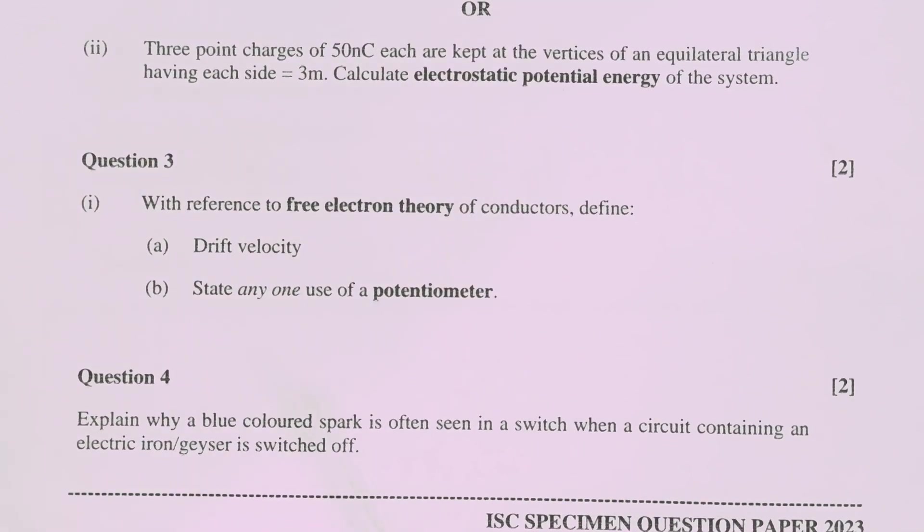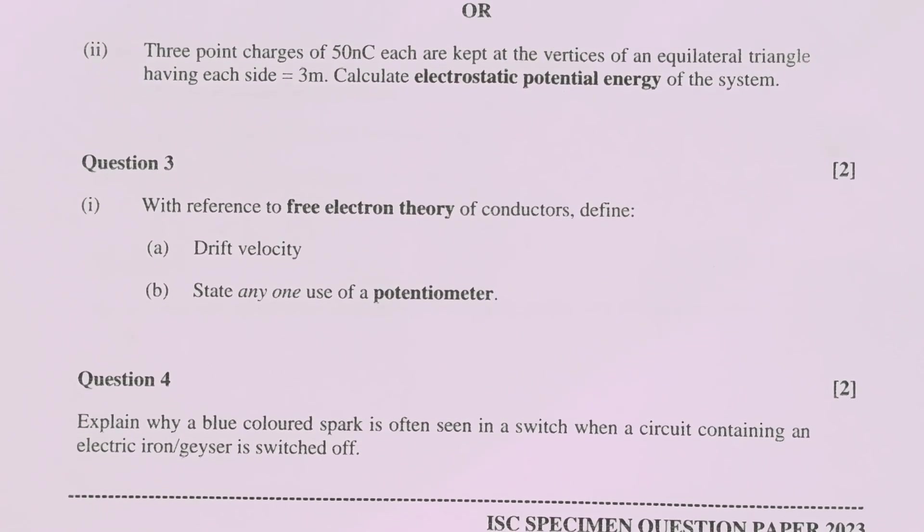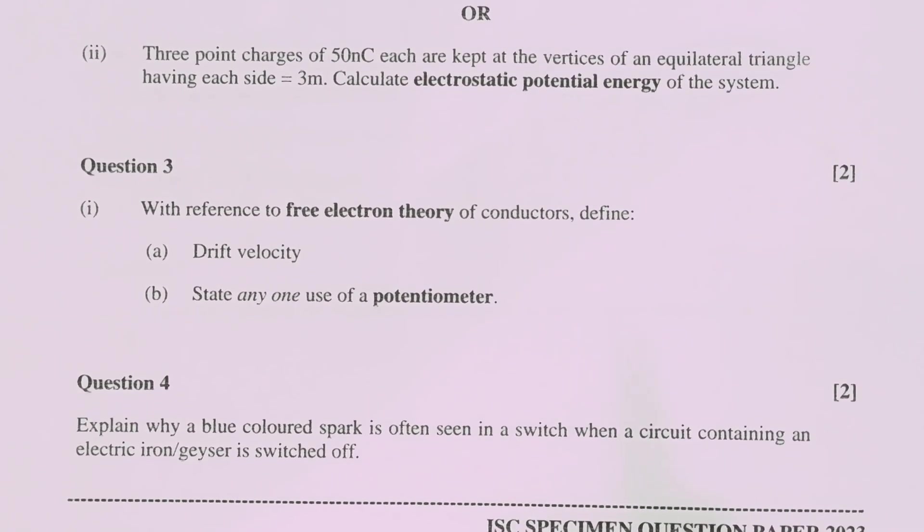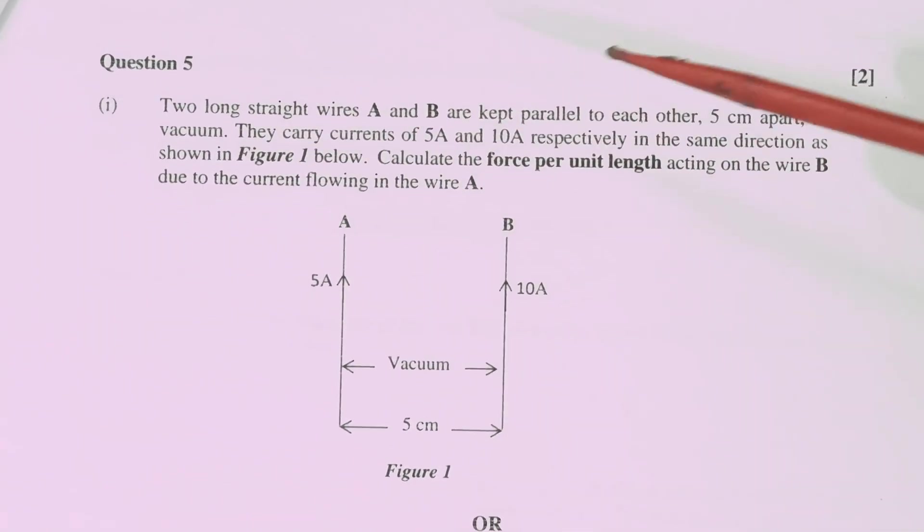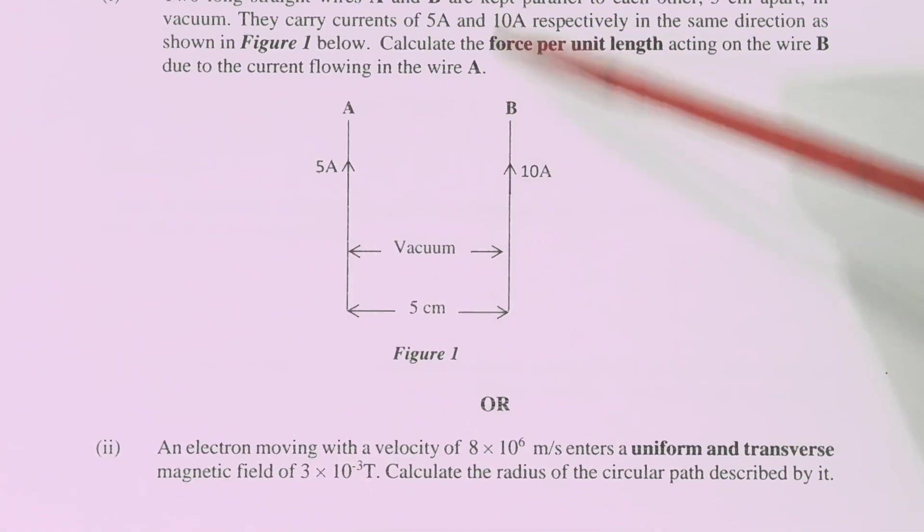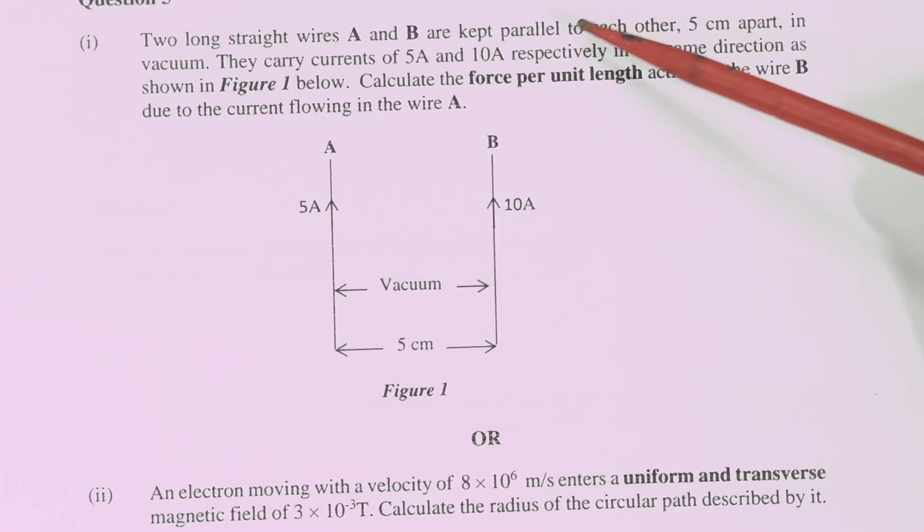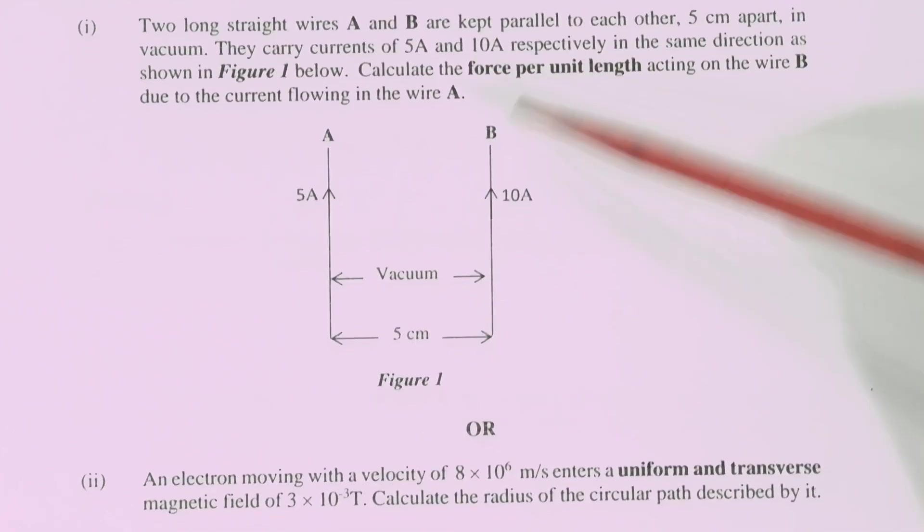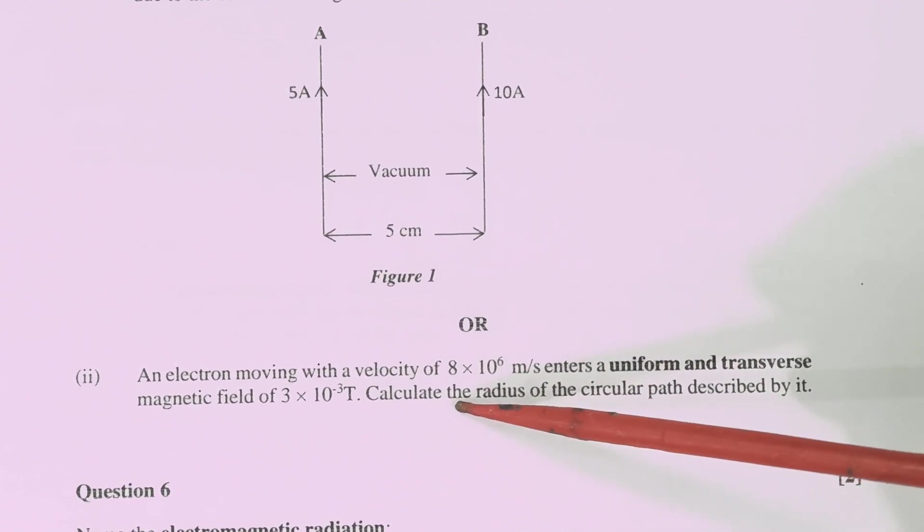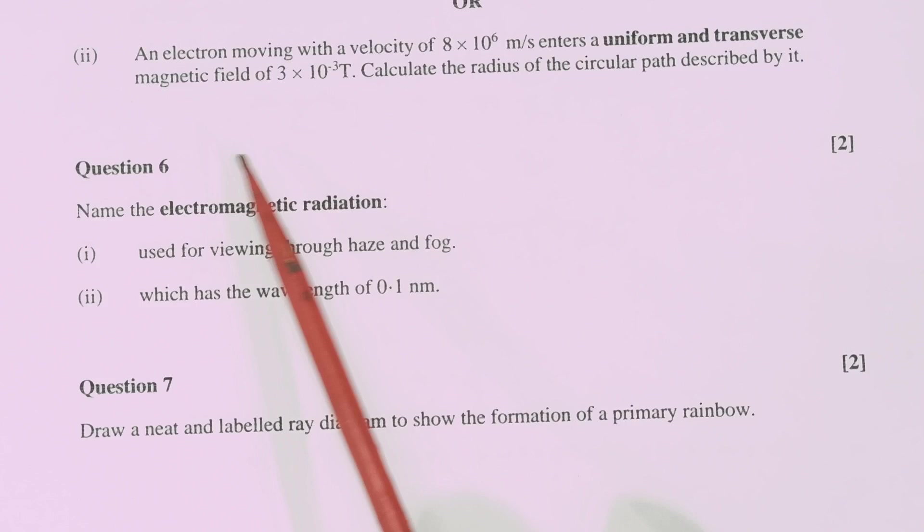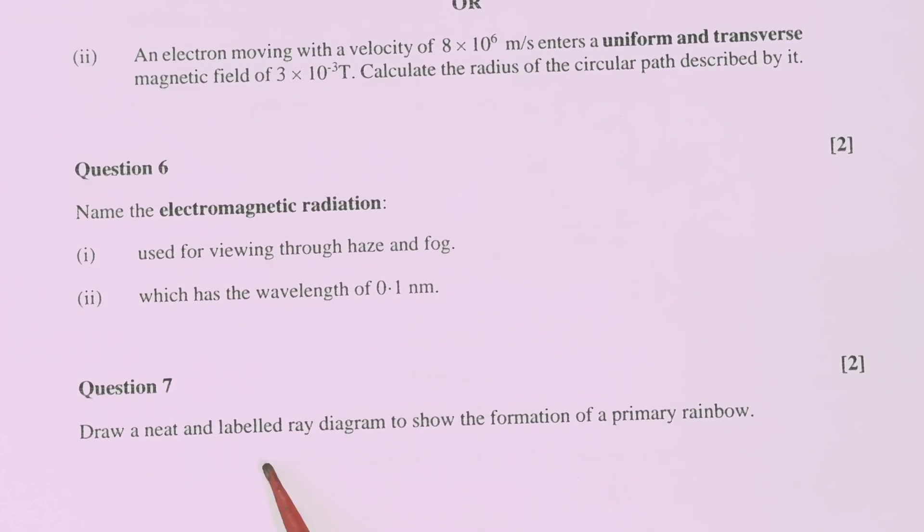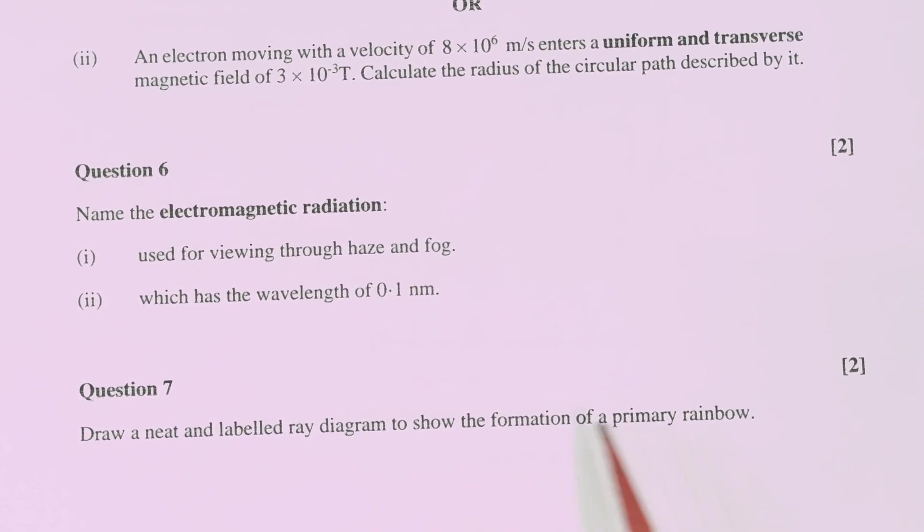So you must know that how much lines or how much content is required in a particular question if it is two marks question. Now in question number 5 again they are giving you option in two questions. And both questions are from magnetism. This question also and this question also. Then question number 6, question number 7 you can see two questions, two marks right. And ray diagram for formation of primary rainbow, two marks. So you just need to draw the ray diagram with proper labeling.